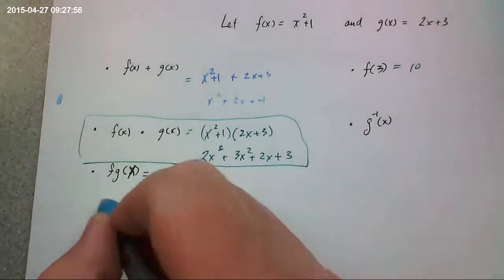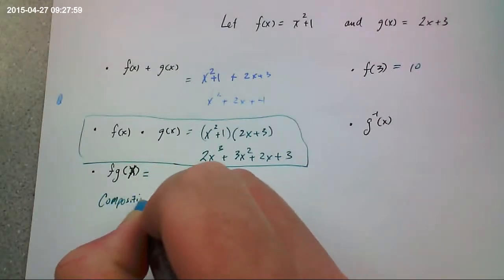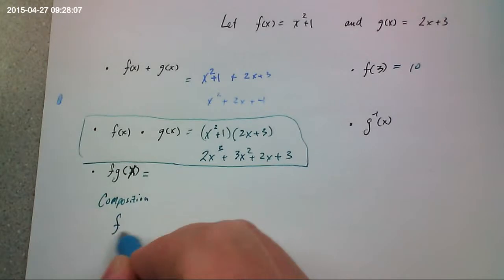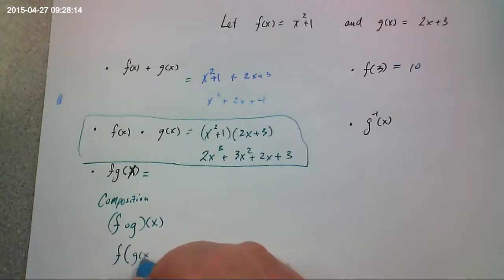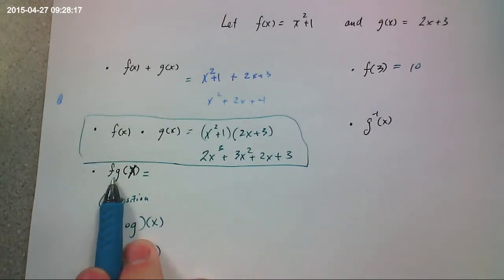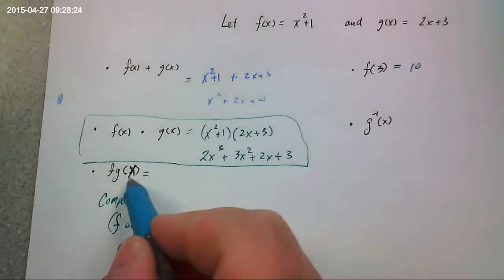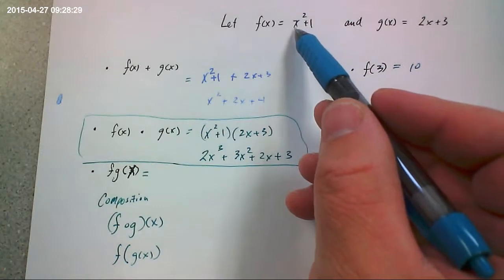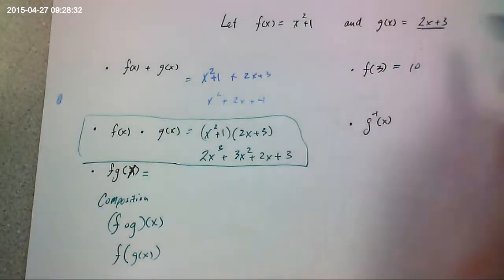Here. This is called composition. What you're doing is you're taking g and plugging the function g into the function of f. The way I've always seen it written is like this. Or like this. But the Cambridge style notation is just like this. There's not a dot in between. It's not multiplying.